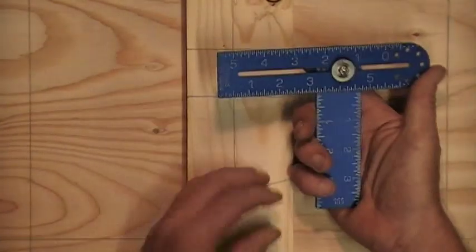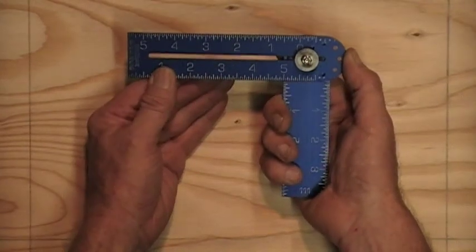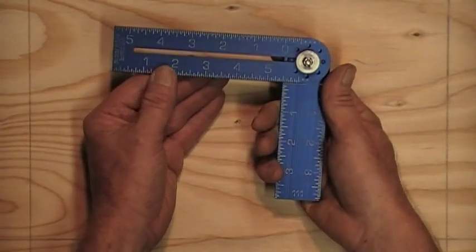Another thing the Omni square does is draw circles from about two inches up to 12 inches. Say I want to cut a hole out at eight inches.